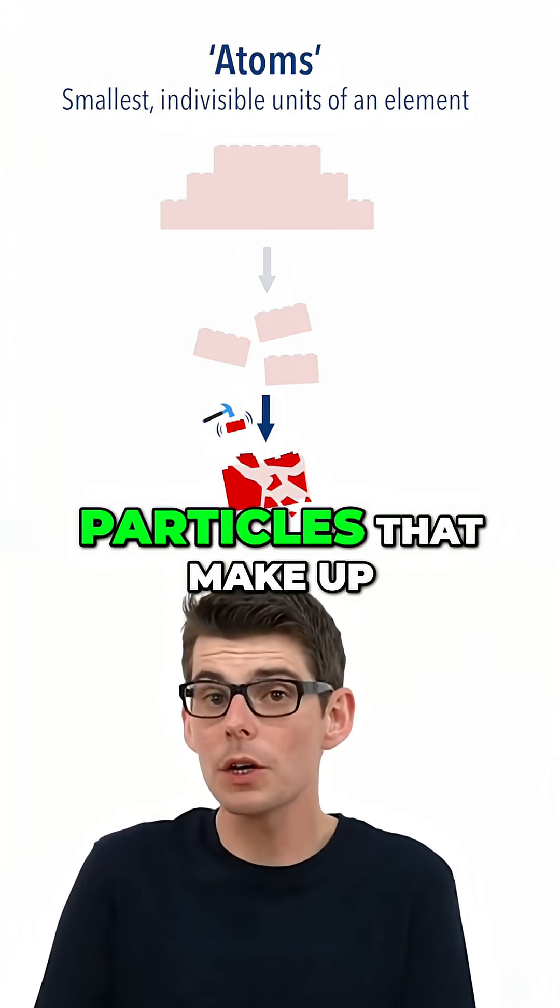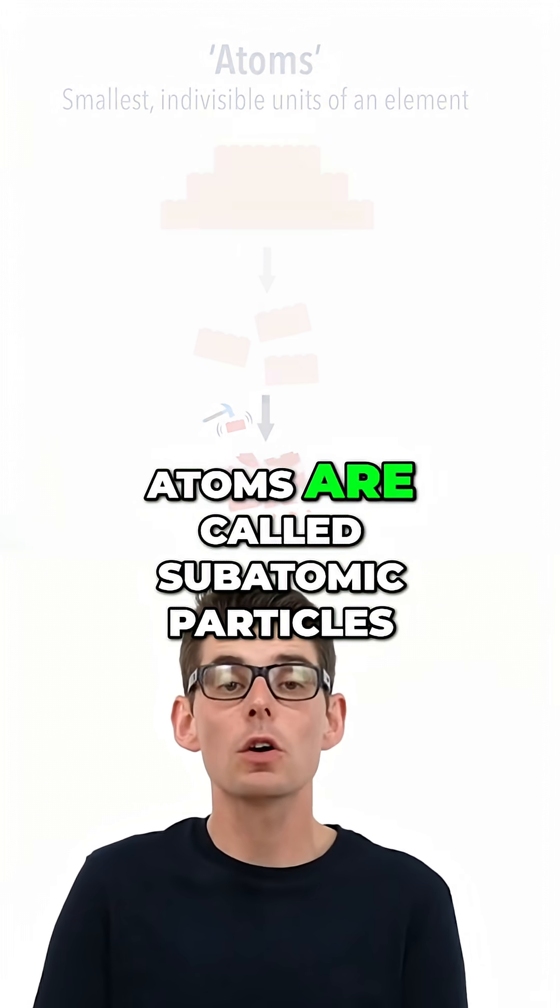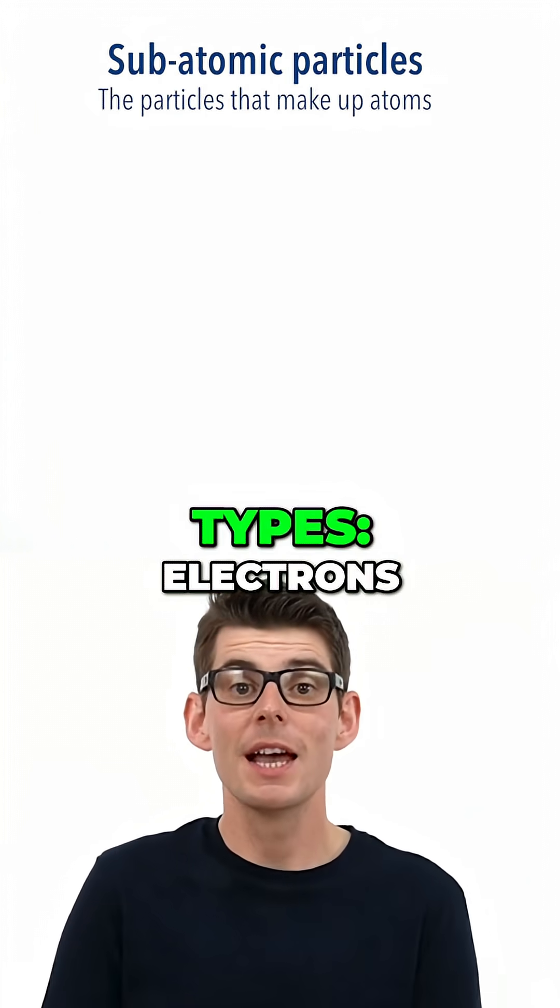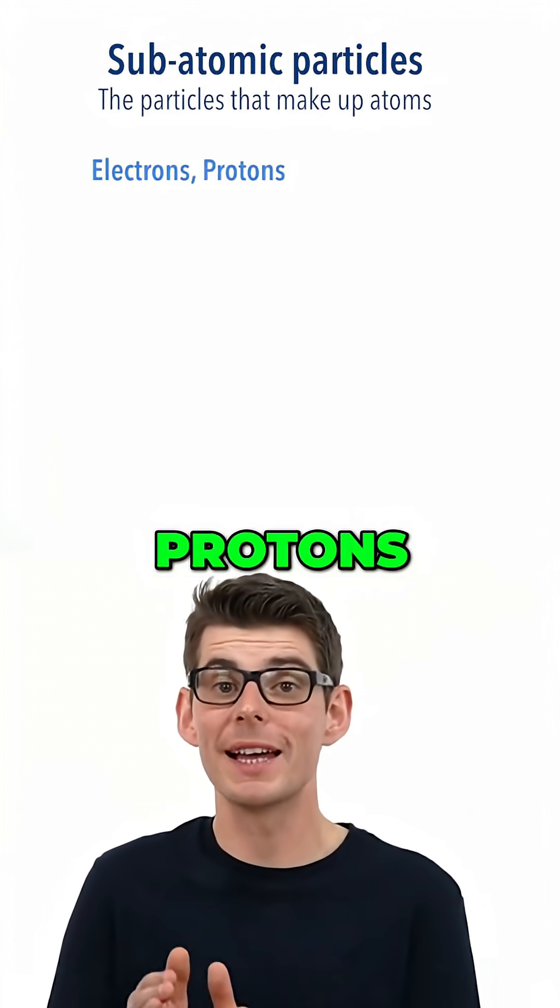The smaller pieces or particles that make up atoms are called subatomic particles and there are three types: electrons, protons and neutrons.